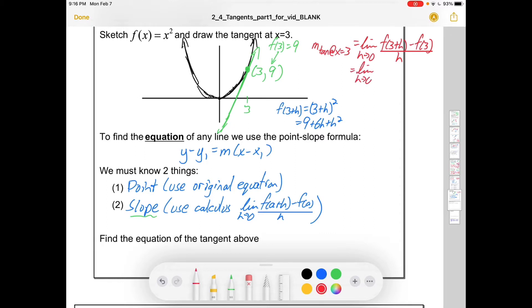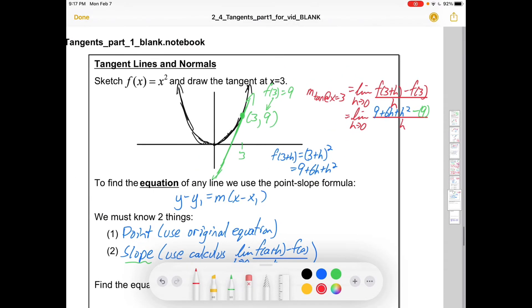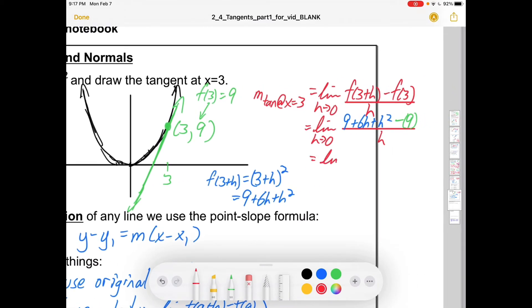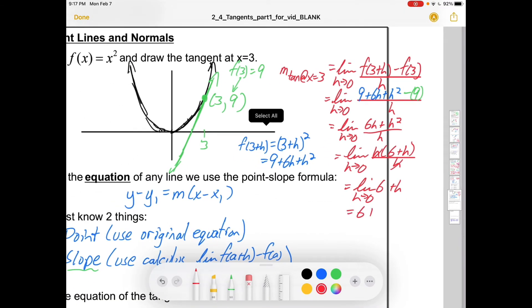So now we're ready to go. If we want that slope, we have f of 3 plus h, so that's 9 plus 6h plus h squared minus f of 3, which is 9. Those 9s will add to 0. So I'll have 6h plus h squared all over h. I can factor. If the h comes out, I'm left with 6 plus h here. Those h's divide out. And I can evaluate this limit. We get 6. That is the slope of the tangent at x equals 3.